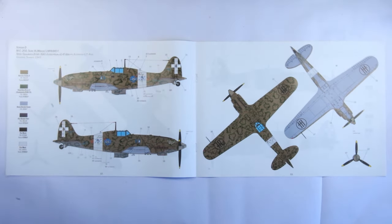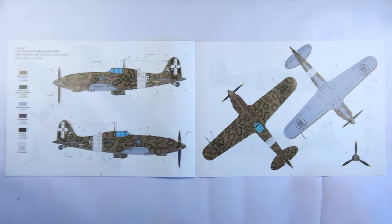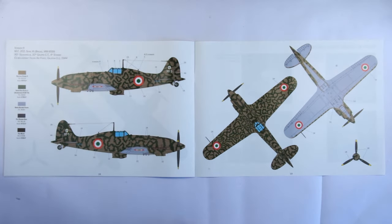All of the colors are called out in both shades and FS numbers and you're not really going to see better than this anywhere else. Schemes are also provided for both during the fascist government and after the downfall of Mussolini, which is another nice aspect here.